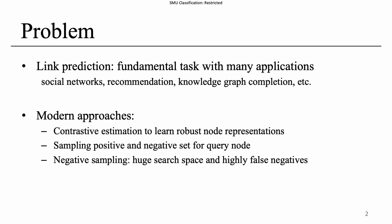Link prediction aims to predict the probability of two nodes being related to each other in a network. It is a fundamental graph learning task with important applications such as friend suggestions in social networks, recommendations in e-commerce, and knowledge graph completion. Modern link prediction methods employ a contrastive approach, sampling positive and negative sets for query nodes to learn robust representations. While positive examples are fairly straightforward, negative sampling involves a huge search space and highly false negatives, which is a crucial research problem.